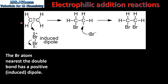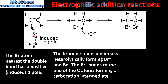Next we look at the mechanism for the reaction between ethene and bromine to form 1,2-dibromoethane. The bromine molecule is easily polarizable. When it approaches the carbon to carbon double bond, which has a high electron density, it acquires an induced dipole. This end of the molecule has a positive dipole and this end of the molecule has a negative dipole. The positive end of the bromine molecule is attracted to the high electron density of the carbon to carbon double bond.